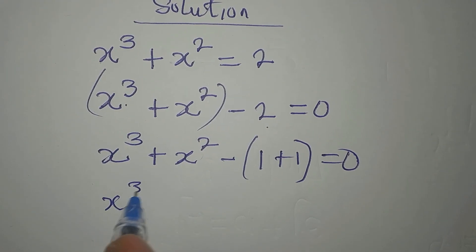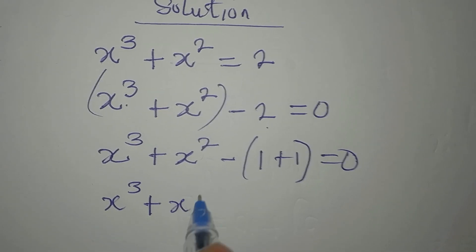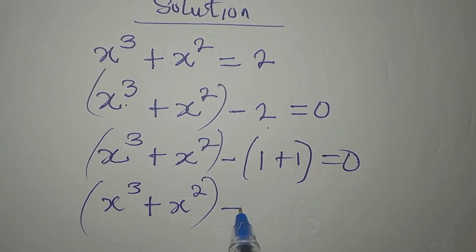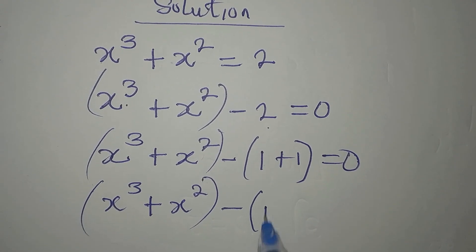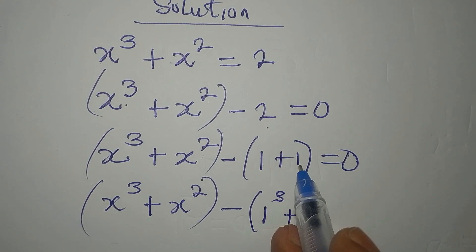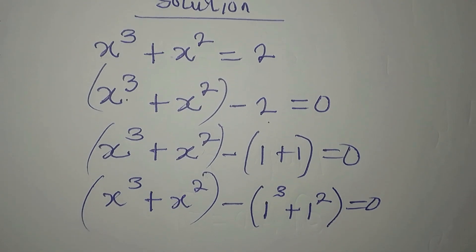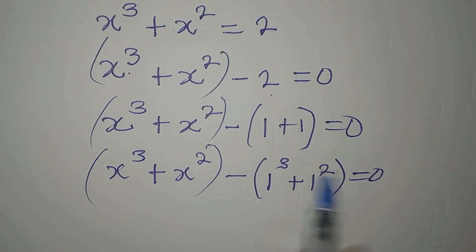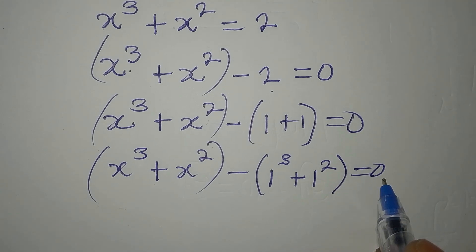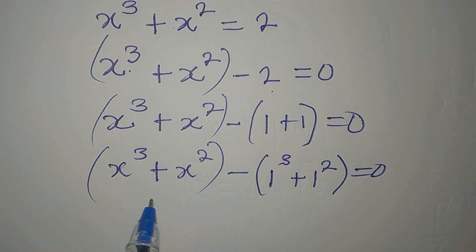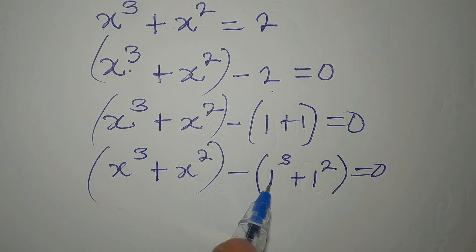Now, x to the power of 3 plus x to the power of 2, minus — this one can be 1 to the power of 3 and this one can be 1 to the power of 2 — and this is equal to 0. So it is obvious that what is here is exactly what is here; if not, you're not going to have 0. But we're not interested in getting only the real solution. If we were, we would have concluded that x equals 1 by comparison.